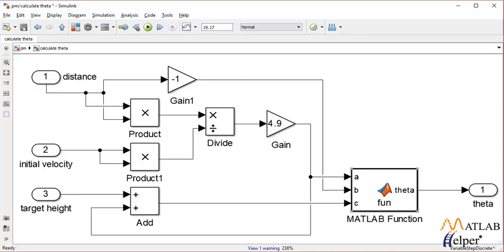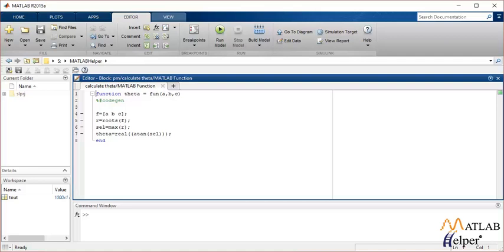Let's see this function. Now this function takes input a, b, and c. This a, b, and c will form a quadratic equation named f, of which we'll find out the roots. And we'll calculate the tan inverse of that root, and we'll get the value of theta in radians.